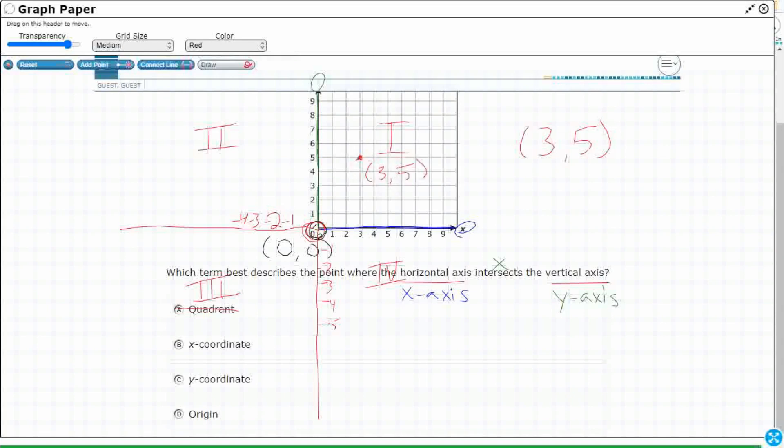Well, the x-coordinate is that first number in the ordered pair. That tells you where to move on the x-axis, which means the five is the second number in the ordered pair. So it's not that. So that point of intersection is not an x-coordinate or a y-coordinate.